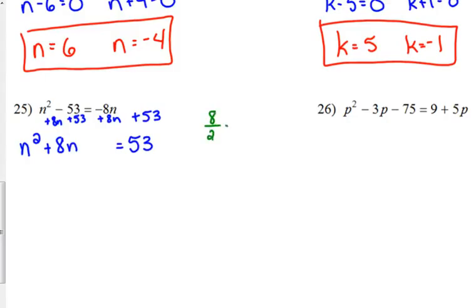All right. So, divide your B by 2. That gives us 4. Square it. That's 16. So, we add 16 to both sides of our equation. So, that factors into n plus 4 squared. And 53 plus 16 is 69.